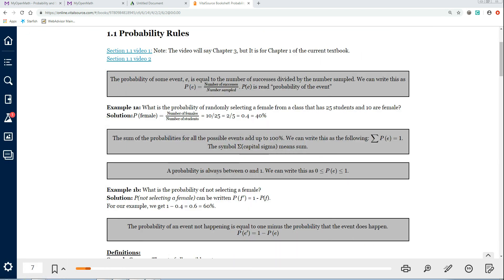So that's how you read that. So here's an example. This one is, what is the probability of randomly selecting a female from a class of 25 students and 10 are female? Well, we could write this the probability of female. This P right here, capital P, stands for probability of is what's inside of parentheses. Probability of selecting a female.